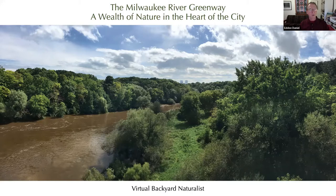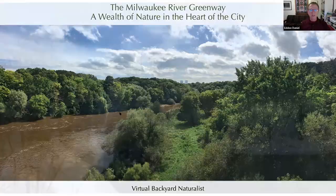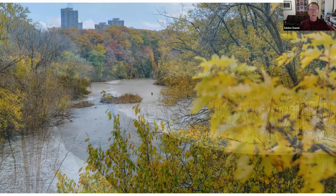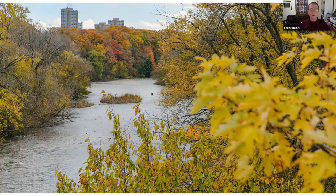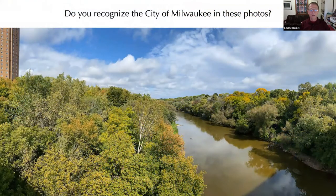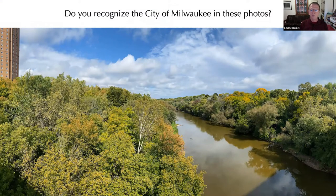We're here to look at the greenway, and I'm going to show you a few quick pictures from the strategic points where you can see it best — the bridges at Locust Street and at Capitol Drive. This view is looking north toward Estabrook Park, and this one is Capitol Drive looking south toward the buildings in the background, which are UWM. And from Locust Street, looking south toward downtown Milwaukee.